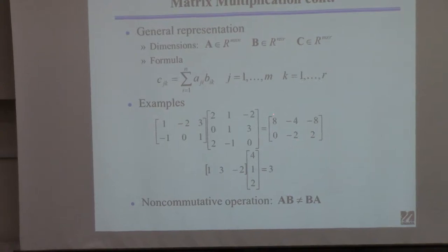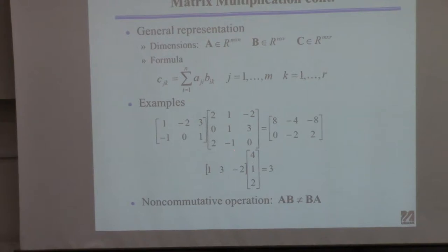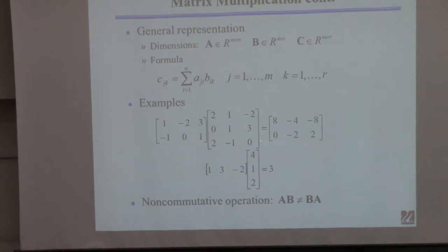How did I get the element 8? I took this row times that column. The 1,1 element comes from the first row of A times the first column of B: 1 times 2 plus 1 times 0 plus 2 times... that's 2 plus 6 equals 8. The minus 4 came from that row times that column, and minus 8 from that row times that column — giving the whole first row.